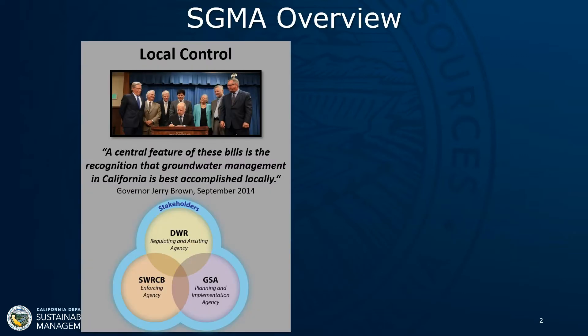As of 2015, the Sustainable Groundwater Management Act, or SGMA as we call it, provides the statutory requirements for groundwater management across the state of California. The central tenet of SGMA is that groundwater management is best accomplished locally due to the size and diversity of conditions across the state. SGMA defines local public agencies called groundwater sustainability agencies, who are responsible for the development and implementation of a groundwater sustainability plan to achieve locally defined sustainable groundwater conditions.